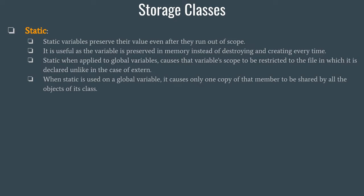When static is used with a global variable, it causes only one copy of that member to be shared by all objects or functions in the program. This concept becomes more relevant in C++ where classes exist, but the key point is: a static variable a will have only one copy throughout the program, and that same copy will be used by every function or entity in that program.